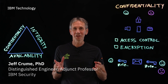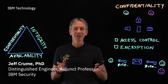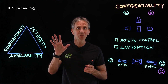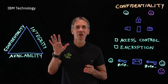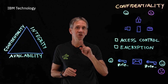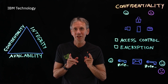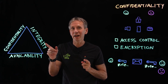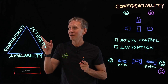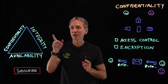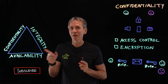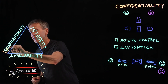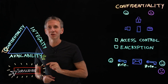Welcome back to our Cybersecurity Architecture series. In the last video, I talked about five security principles you should always follow and one you should never follow. In today's video, we're going to talk about the CIA — no, not the spy guys — confidentiality, integrity, and availability. So let's get started with the first of these: confidentiality.